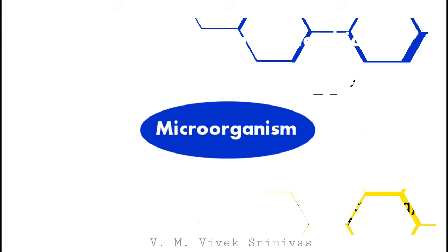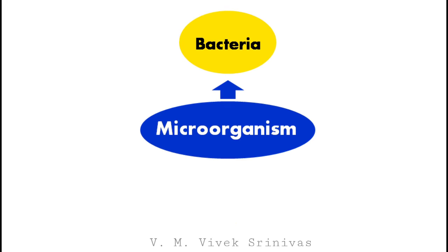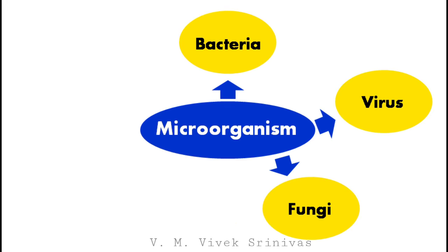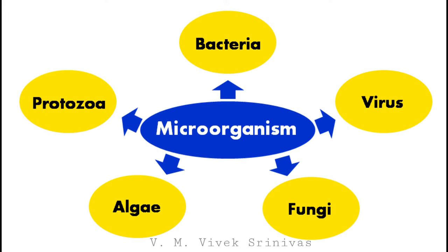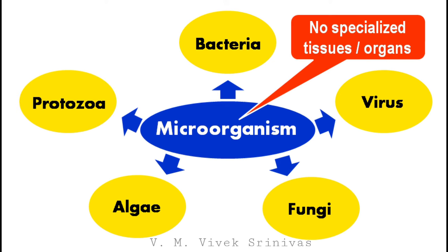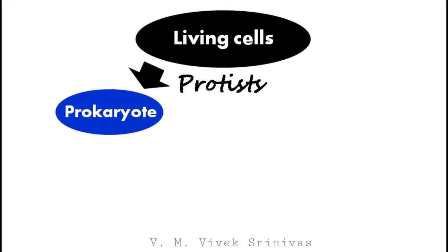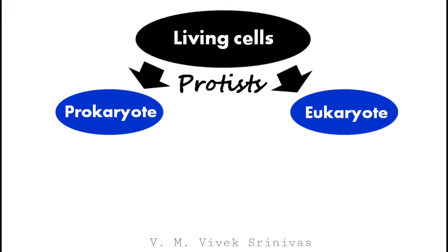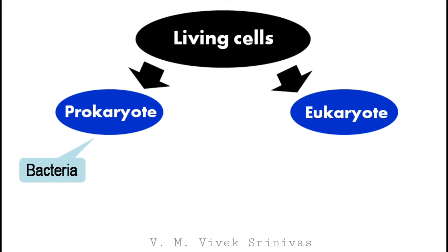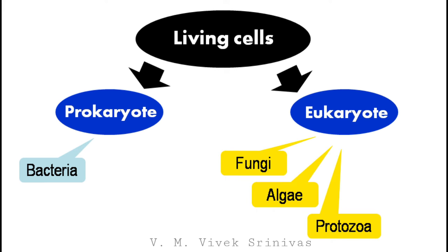The term microorganism includes bacteria, virus, fungus, algae, and protozoa. These organisms do not possess specialized tissues and organs as found in higher plants and animals. In general, all living cells are broadly classified into two groups: prokaryotes and eukaryotes. Bacteria are under prokaryotes, and fungi, algae, protozoa, plant cells, and animal cells are classified under eukaryotes.